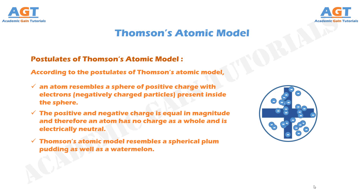Thomson's atomic model resembles or looks like a spherical plum pudding as well as a watermelon. It resembles a plum pudding because the electrons in the model look like dry fruits embedded in a sphere of positive charge, just like a spherical plum pudding. The model has also been compared to a watermelon because the red edible part of a watermelon was compared to the sphere having a positive charge, and the black seeds filling the watermelon looked similar to the electrons inside the sphere.